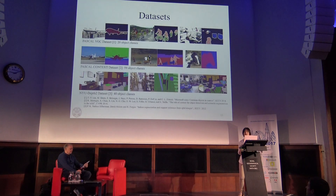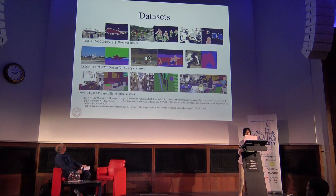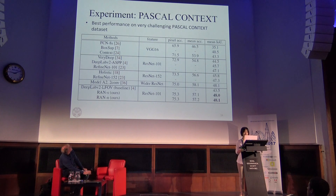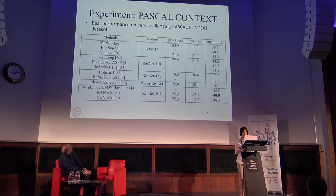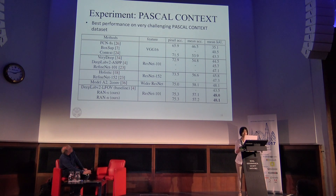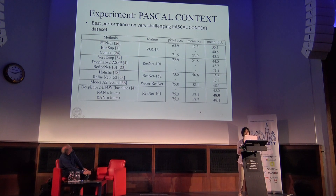We tried this reverse attention network on different datasets, most of which are commonly used for evaluation, including Pascal VOC, Pascal Context, and NYUD. Selecting some examples from the Pascal Context dataset, which is very challenging: looking at the last two rows, which are our results, and comparing with our baseline architecture — essentially DeepLab V2 based on ResNet — we managed to get about 4.5 gains. We also achieved higher performance in terms of IOU evaluation, and higher performance than RefNet, which is based on a deeper ResNet.